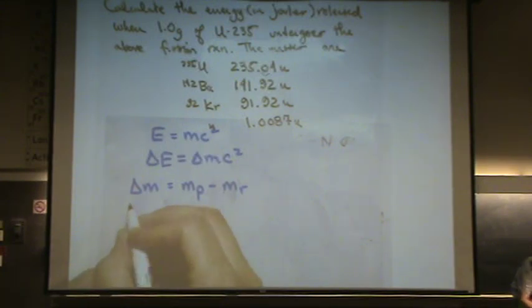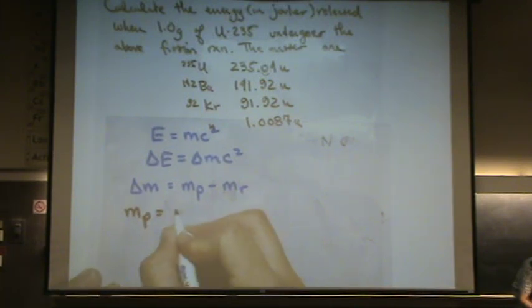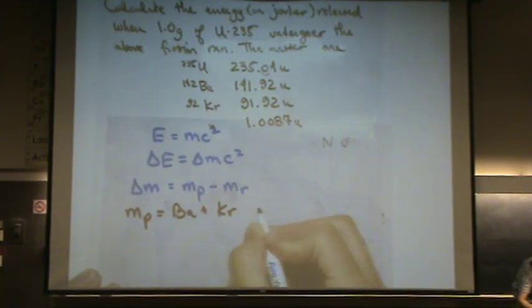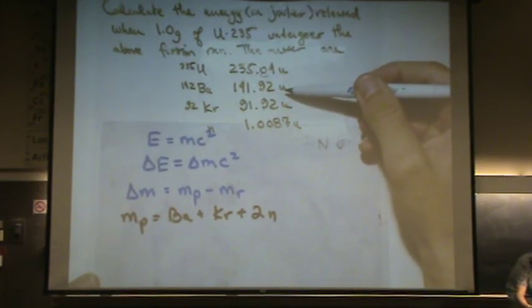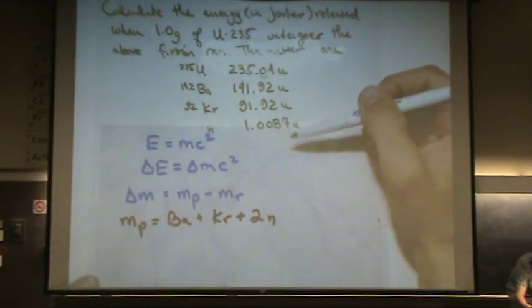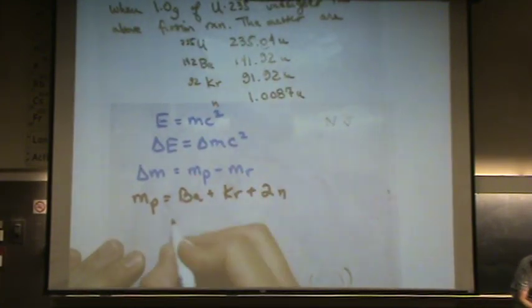So the mass of the products, that's the barium plus the krypton plus two neutrons. So I'm going to add barium, the krypton, and two neutrons together using these numbers I was given.